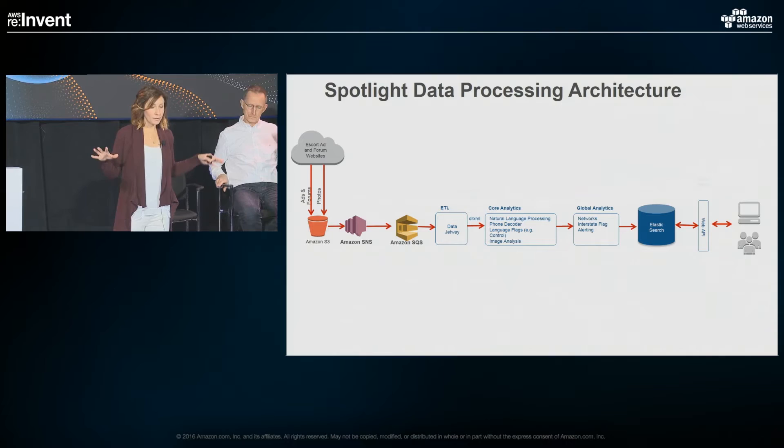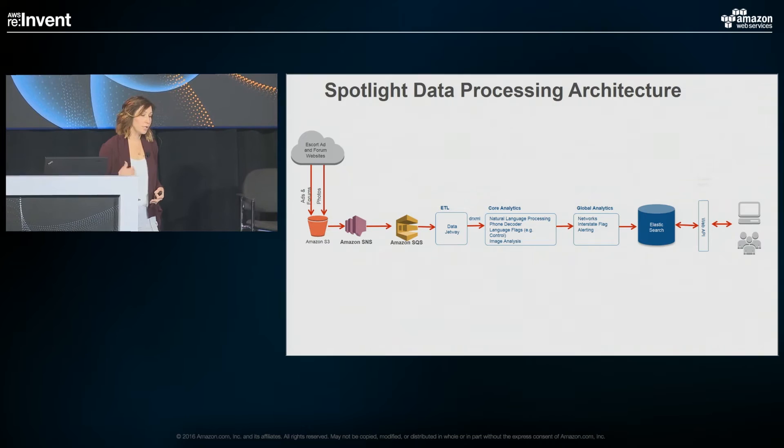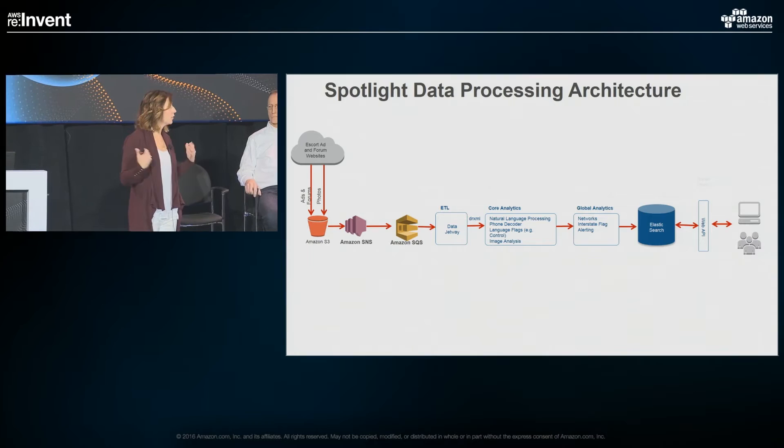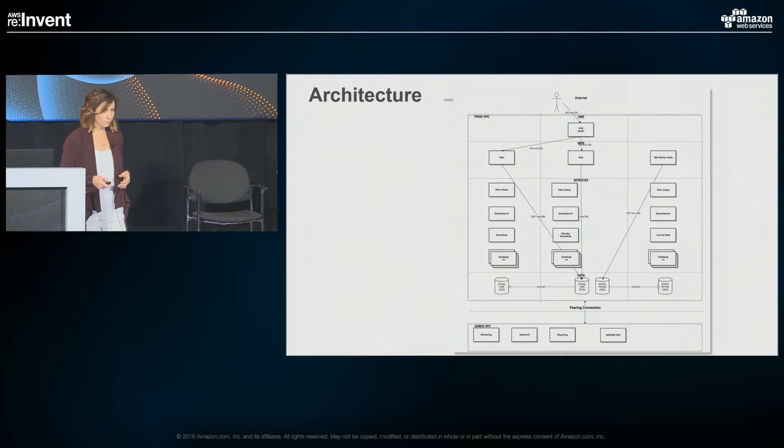We then move to global analytics where we're looking at networks. If somebody has been trafficked across state lines, we have an interstate flag. We also have alerting mechanisms — we allow law enforcement to get alerted on particular criteria. Elasticsearch is where our persistent data is stored, and then we have a web API which law enforcement uses to access the application. Think of it as basically law enforcement's search tool for investigating human trafficking.